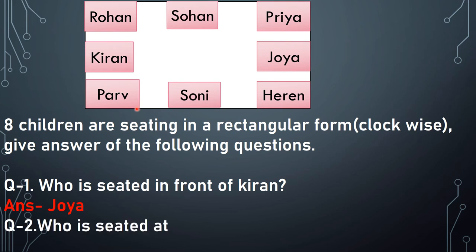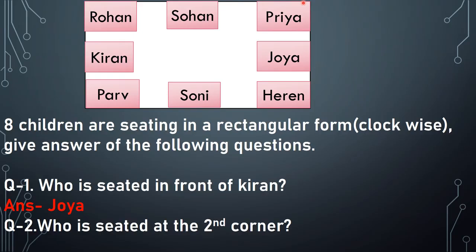Question number 2: Who is sitting at the second corner? We have done corners and we are doing clockwise — keep this in your mind. Clockwise we have started here, so this is our first corner, first, second, third, and this is fourth. So first is Pre, second is Herain. So here we are writing Herain.